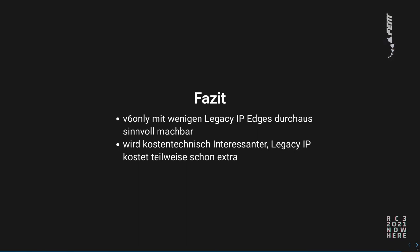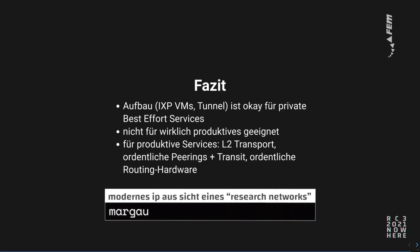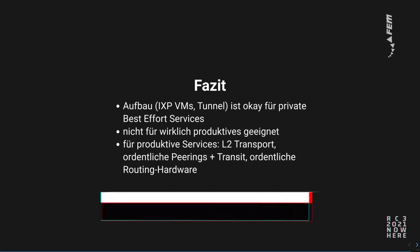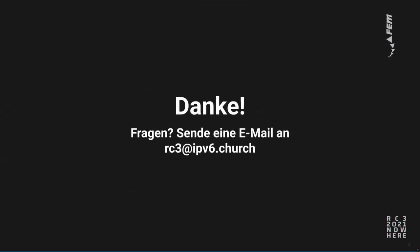Let's get to the conclusion. Will I do it again? Yes. IPv6-only with only a few legacy IP edges really makes sense. It is doable in a reasonable fashion. Cost-wise it probably also makes sense since legacy IP is often a bit more expensive, and many providers will fairly soon charge more for it. The layout I did with the IXP VMs and tunnels is okay for private best-effort things but not really suitable for productive networks — anything that actually earns money. For that you need actual peerings, actual layer 2 transport, actual hardware. But that wasn't really the goal of this project. Thank you very much for watching and listening. If you have any questions you can send me an email to rc3@ipv6.church.